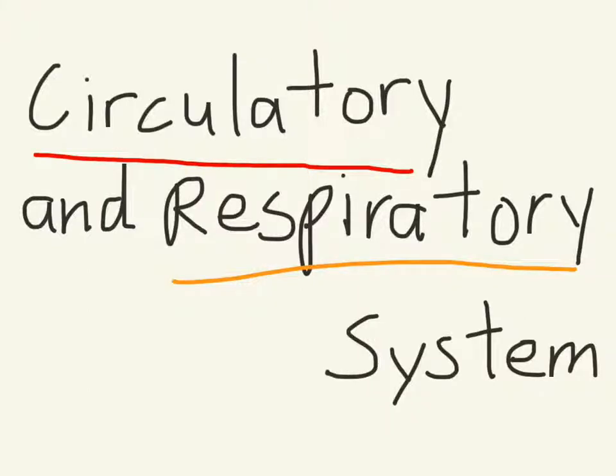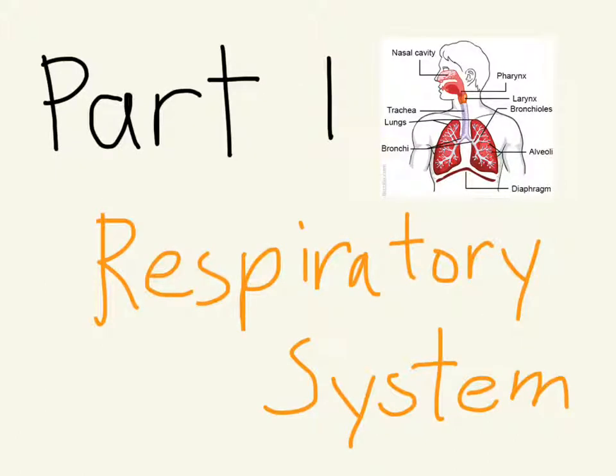Respiratory and circulatory system by Bowie. Part one: respiratory system. The respiratory system is a system of organs that lets you breathe and get the life-giving oxygen to every single cell in your body.